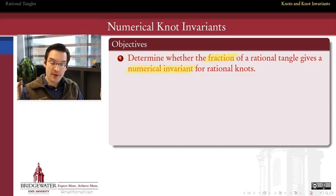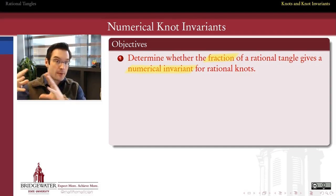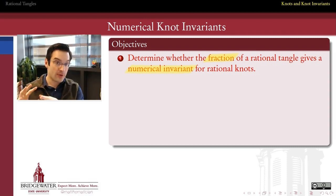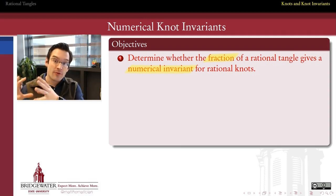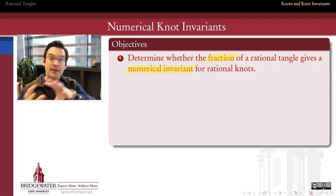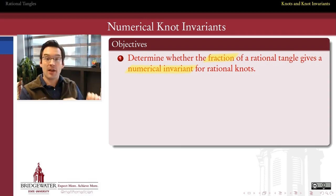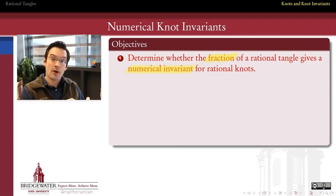Our first order of business is to figure out whether we can take what we learned about numerical invariance for rational tangles. In particular, we learned that the fraction of a rational tangle gives us a complete invariant for that rational tangle. The first thing we want to do is figure out how to use that to tell us something about the knots which are related to those rational tangles, called rational knots.